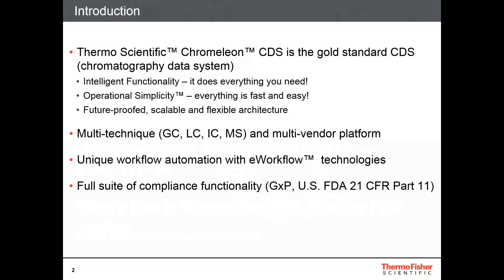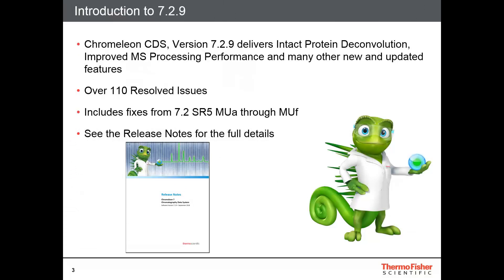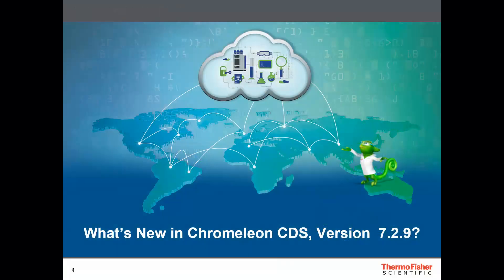A comprehensive suite of tools are provided to ensure full regulatory compliance, which can now be applied to your MS data too. Version 7.2.9 was released in October 2018 and added a significant number of new and improved features, such as intact protein deconvolution and mass spec performance improvements, along with more instrument control drivers and resolution of over 110 issues. For full details, please take a look at the release notes. So let's go through the new and updated instruments and then see the new features that have been added.